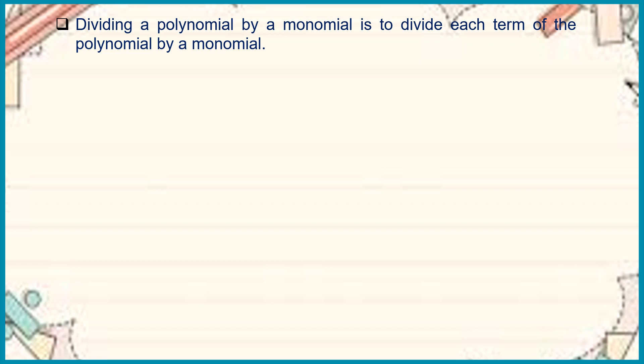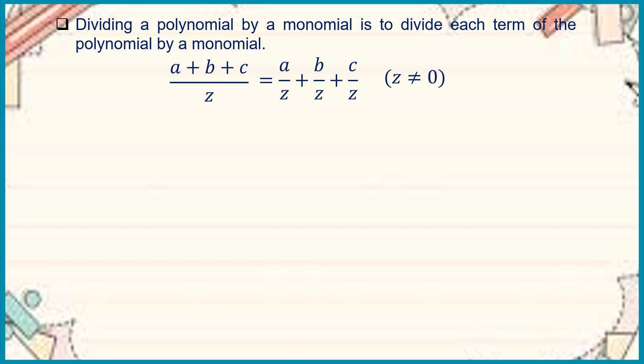Now let us divide a polynomial by a monomial. Dividing a polynomial by a monomial means dividing each term of the polynomial by the monomial. So a plus b plus c divided by d equals a over d plus b over d plus c over d, where d is not equal to zero, because any number with a denominator of zero is undefined.